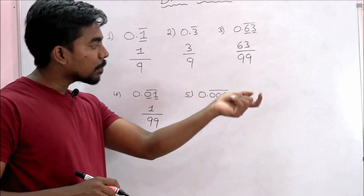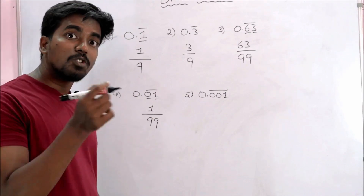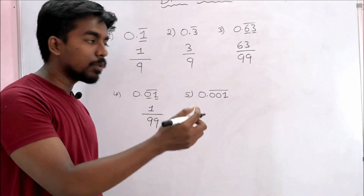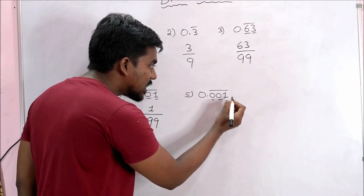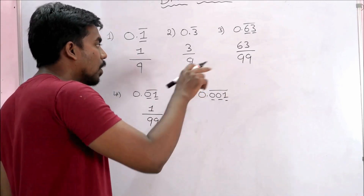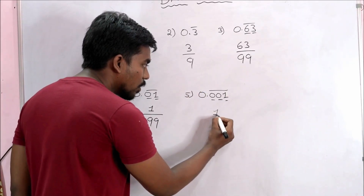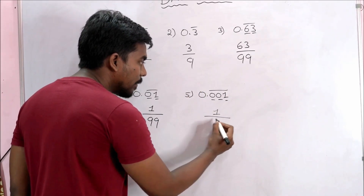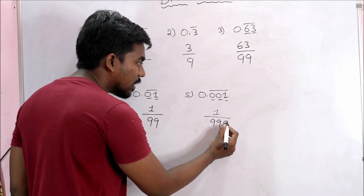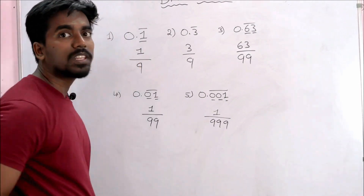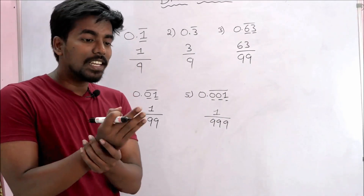Here we have 3 digits. There is 0.001 bar. How many digits are there? There are 3 digits. So what do we do? 1 by 9, 9, 9 — there are three 9s. There are 3 numbers.